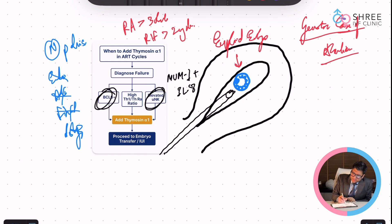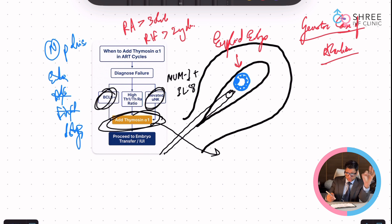That's why we say when we add Thymosin alpha, how do we add it? What is the protocol? Remember one thing, we don't have a set protocol at the moment as we speak and we are speaking to you in 2025. So at this moment, what do we do? We give Thymosin three times a week.